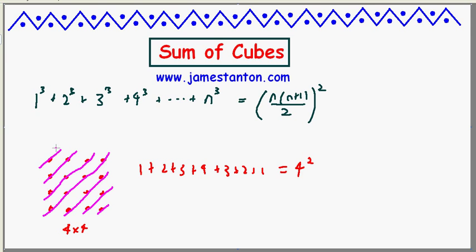And there it is. That's all 16 dots accounted for: 1, 2, 3, 4, 3, 2, 1. In fact, in general, 1 plus 2 all the way up to n and then back down again would just be an n by n array of dots. So the answer must be n squared, which is kind of nice.